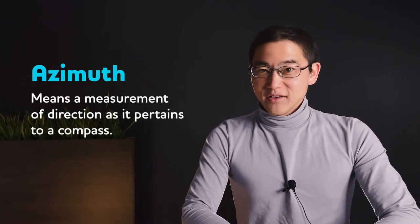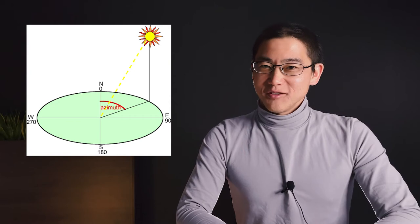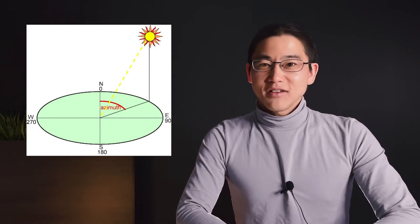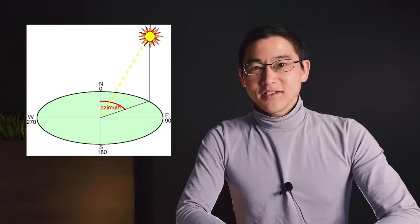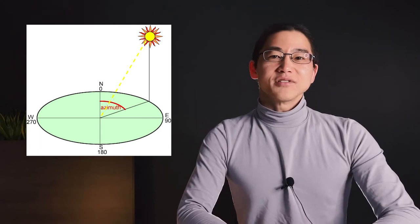The next word is azimuth. Azimuth describes the measurement of direction as it pertains to the compass. So, due north is zero degrees, due east is 90 degrees, due south is 180 degrees, and due west is 270 degrees.